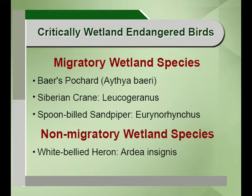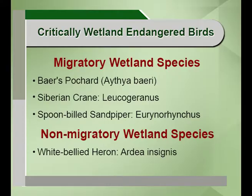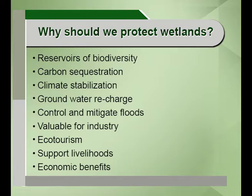Coming on to the critically endangered wetland birds, these can be classified into migratory and non-migratory wetland species. In the migratory category, three endangered species include the Baillon's crake, the Siberian crane and the spoon-billed sandpiper. Non-migratory wetland species include the white-bellied heron. These are reservoirs of biodiversity — from the phylum Protozoa all the way to mammals and vertebrates, there are diverse flora and fauna which are present in the system that we need to protect.